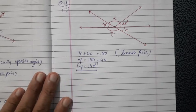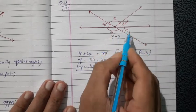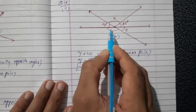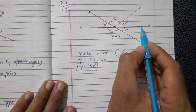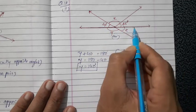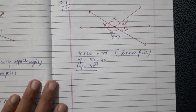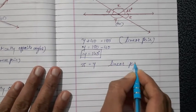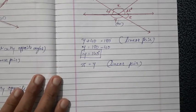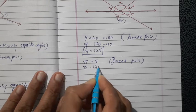Y is confirmed as 140 degrees. Now z and y also have a common arm, and the other two arms are in opposite directions, making a straight line, so y and z are also a linear pair. Write down the reason: because they are angles of a linear pair. Put the value of y, so z equals 140 degrees.